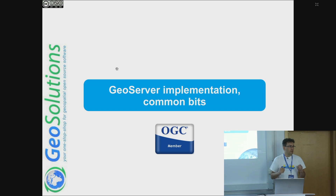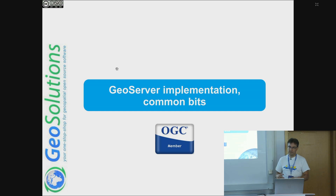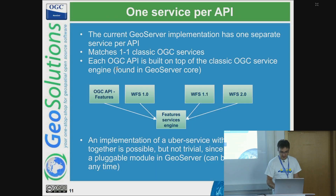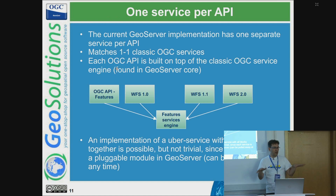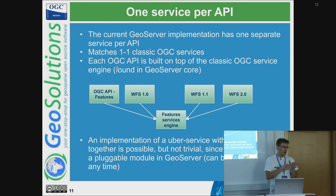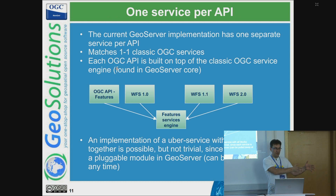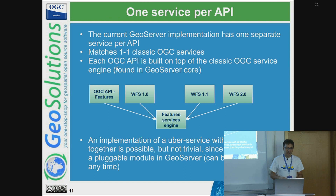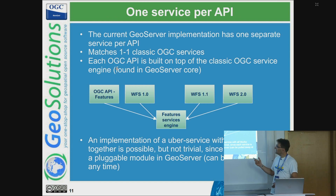Looking at the common bits of GeoServer's flavor of OGC APIs: OGC APIs are very flexible and can be implemented in a variety of ways. GeoServer takes a one-service-per-API approach, mirroring the classic OGC services. So there is an OGC API Features service and an OGC API Tiles service, but they don't overlap — it matches one-to-one the classic OGC services. Implementation-wise, the classic OGC service and the OGC API talk to the same internal engine.